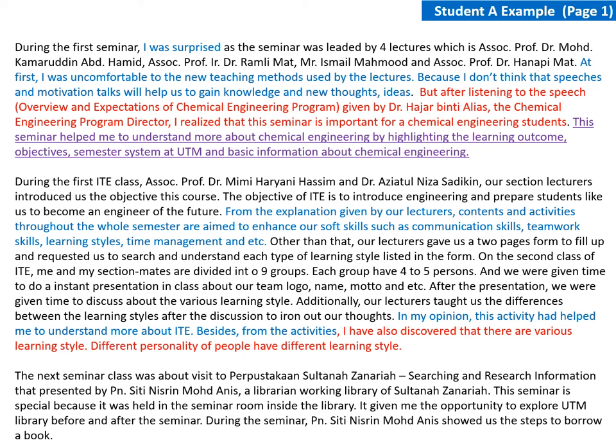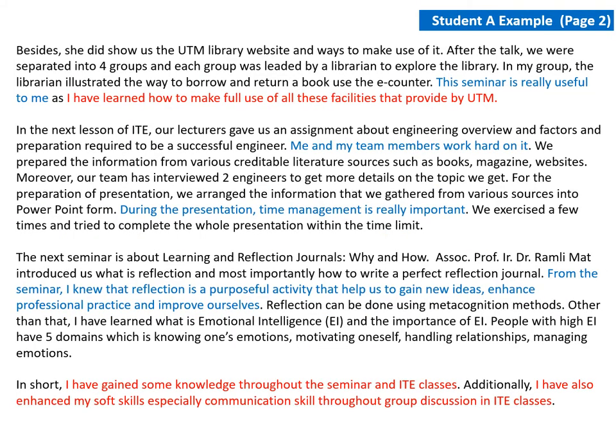However, in this example there is no feedback being mentioned. Feedback is something that you need to say or commit to — you need to have the intention to improve in future. The basic keyword or indication is 'in future.' However, in this reflection journal the student did not show the feedback. Here's the continuity of Student A's reflection journal on page two — you can pause this video to properly and carefully read.